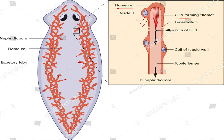The cilia beat or move, and the excess amount of water along with metabolic waste that is present enters the flame cell by the beating of the cilia. When the cilia beat, the excess water enters the cilia and then moves out — the excess water and metabolic waste move out from the body through small pores called nephridiopores.